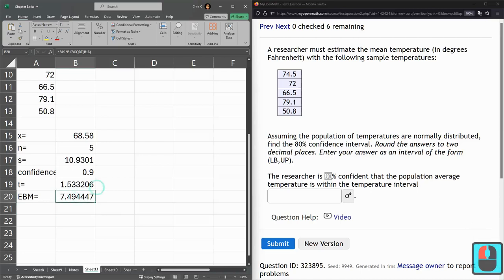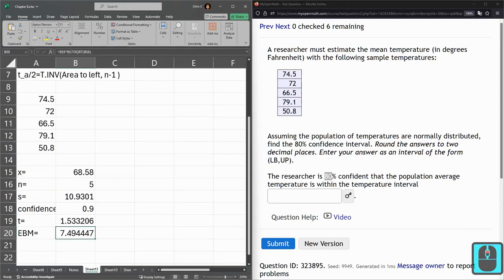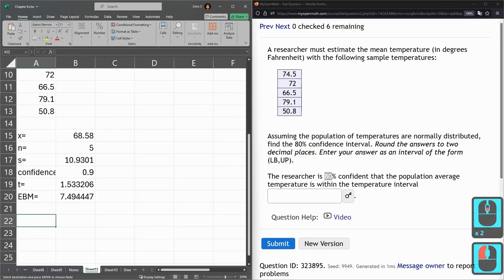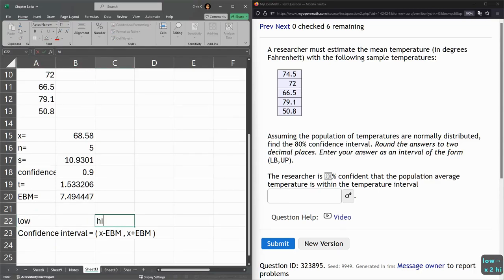We're almost there. Now this, we have to take this number. We want to get the confidence interval now. I'm going to copy that, paste it down here. So we have the low and the high. The low is X minus EBM. So it's X minus EBM. Enter. High is X plus EBM. Right there.